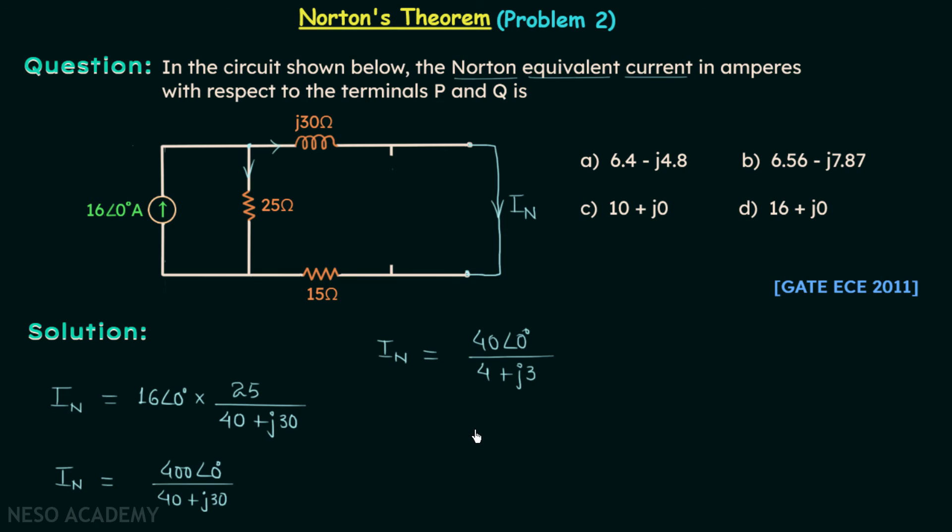Now in order to perform the division, we will convert 4 plus j3 to its equivalent polar form. So we have IN equal to 40 angle 0 degree already in polar form. 4 plus j3 is having the polar form equal to 5 angle 36.87 degrees.